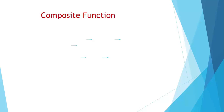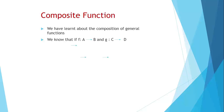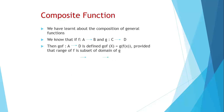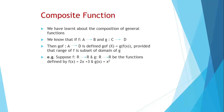Now, what is a composite function? We learned in chapter one that if f is a function from A to B and g is a function from C to D, then the composition g∘f will be defined from A to D, written as g∘f(x) = g(f(x)), provided the range of f is a subset of the domain of g. For example, if f(x) = 2x + 3 and g(x) = x², then g∘f(x) = g(f(x)) = (2x + 3)².